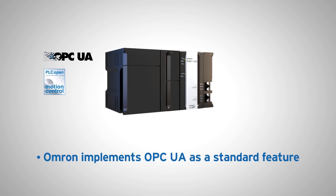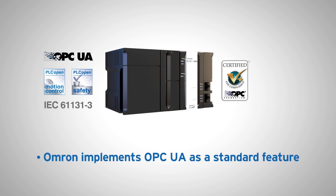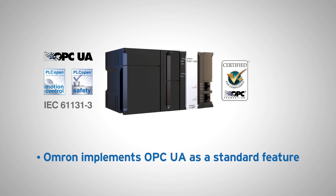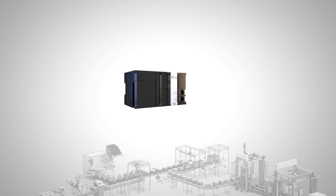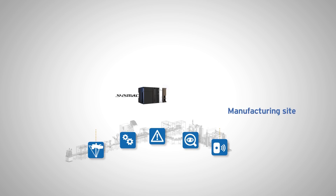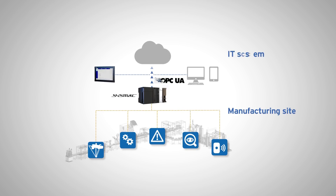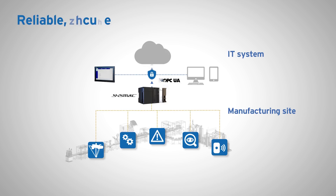Omron implements OPC UA as a standard feature — an information exchange standard for industrial communication. NJ5 with OPC UA provides open and direct communication between machine and IT systems. This solution ensures reliable, secure and easy communication.